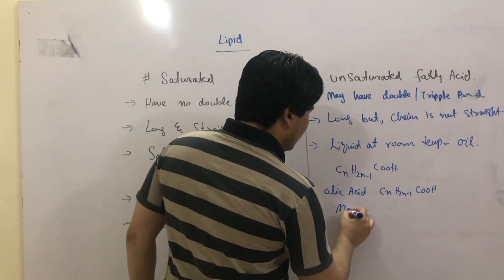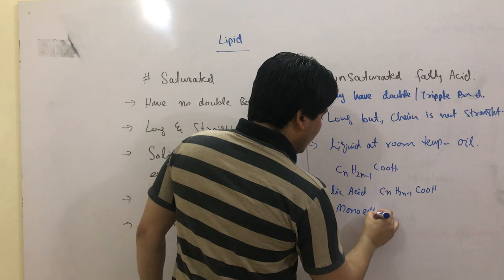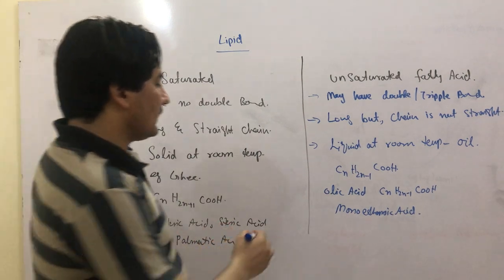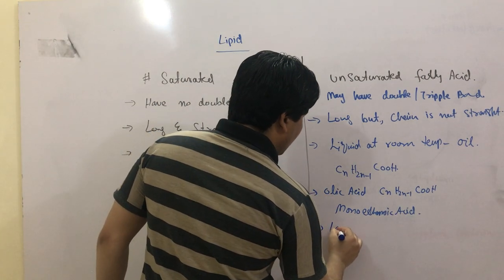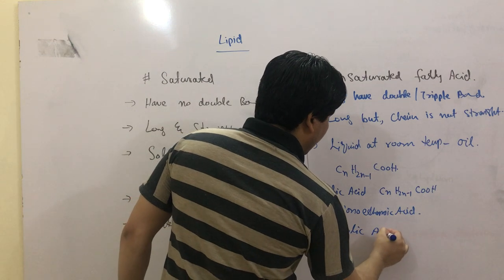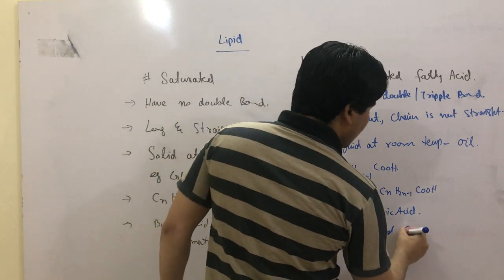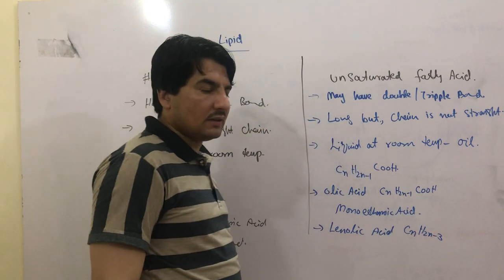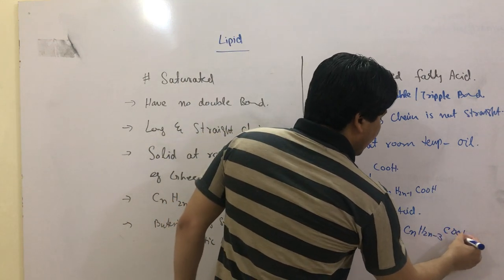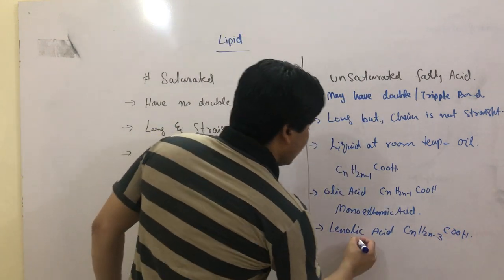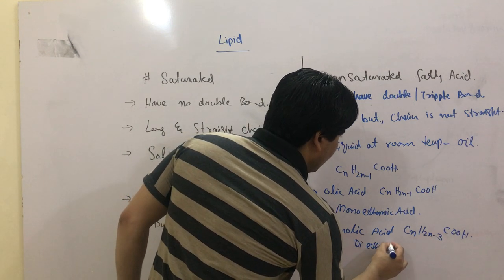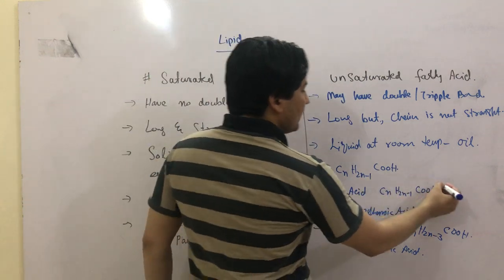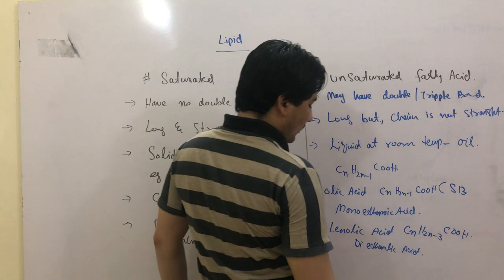For example, monoenoic acids. The second one is oleic acid. The formula is C_n H_{2n-3} COOH. This is a dienoic acid.